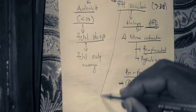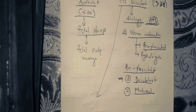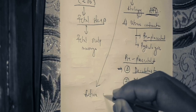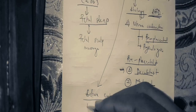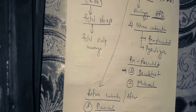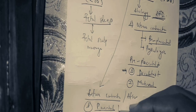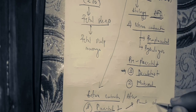If fetal acceleration occurs before contraction or after contraction, the etiology of the acute fetal distress is placental. The placental etiologies of acute fetal distress include: the first one is placenta abruptio.